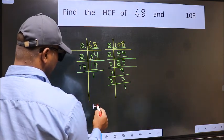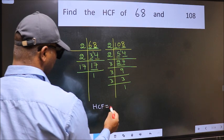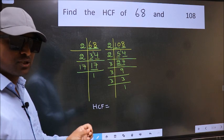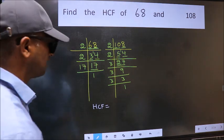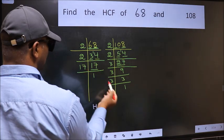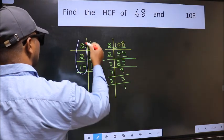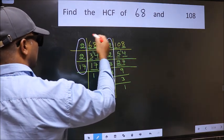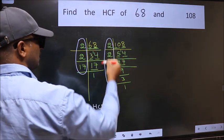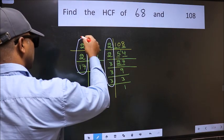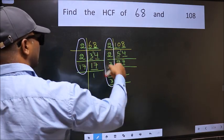Therefore, our HCF is the product of the numbers which should be present in both factorizations. That is here and also here. So now, let us find the numbers which should be present here and here.